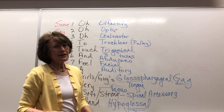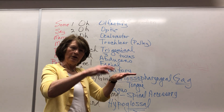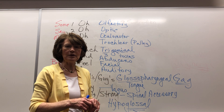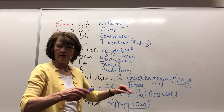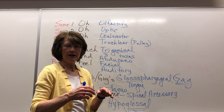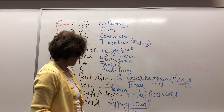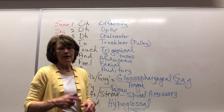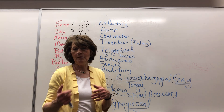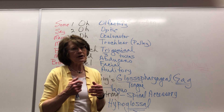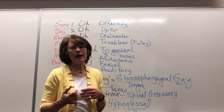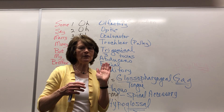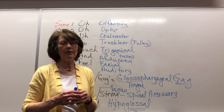Spinal accessory: put your hands on their shoulders and tell them to push up against your hands — if they can, the spinal accessory is working. It's essentially the shoulder shrug. Hypoglossal, number twelve: hypo means under, so it's under the tongue. If someone broke their jaw playing football, the hypoglossal nerve may have been torn. Ask them to stick their tongue out — if it has tremors or goes to one side, that indicates a problem with the hypoglossal nerve.